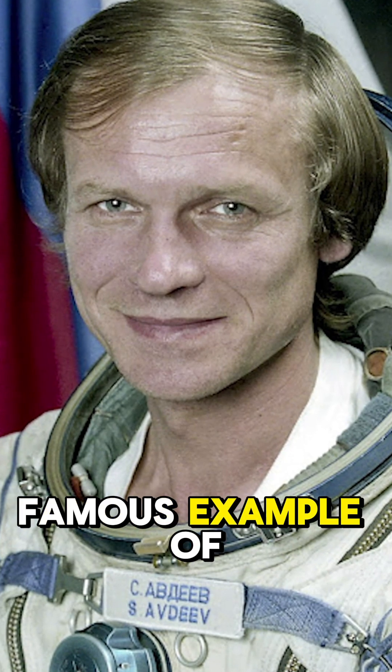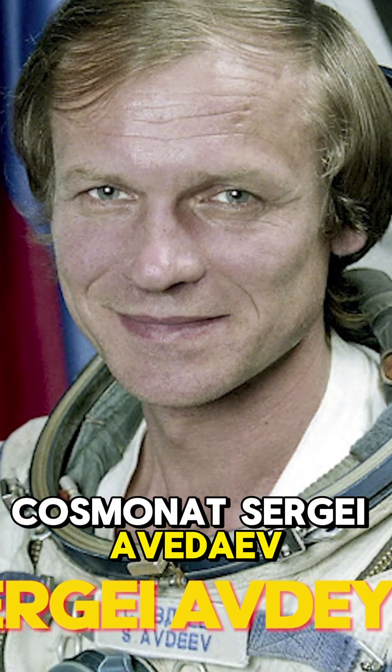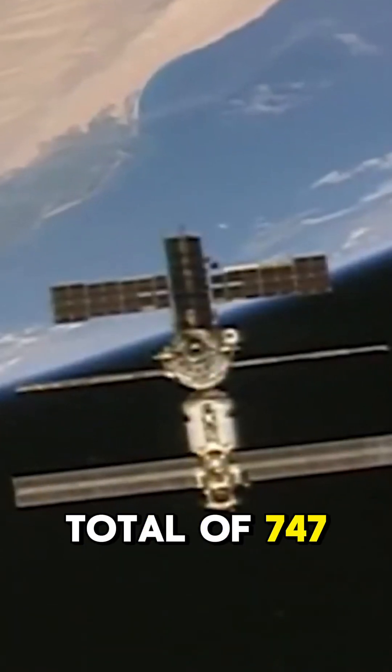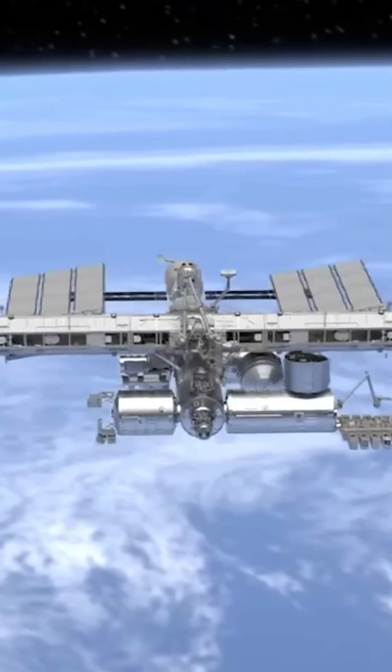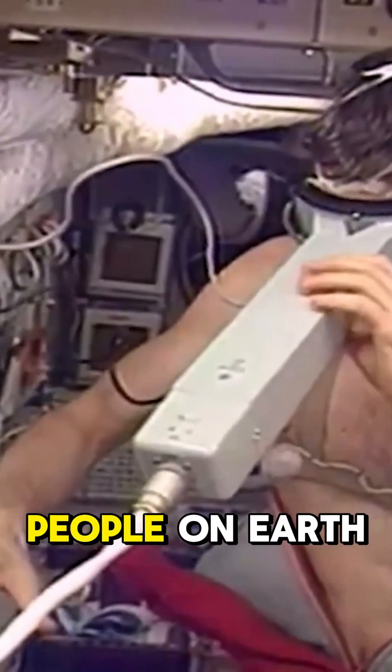There's also the famous example of cosmonaut Sergei Avdeyev, who spent a total of 747 days in orbit aboard space stations Mir and the International Space Station. Due to time dilation, he aged about 0.02 seconds less than people on Earth.